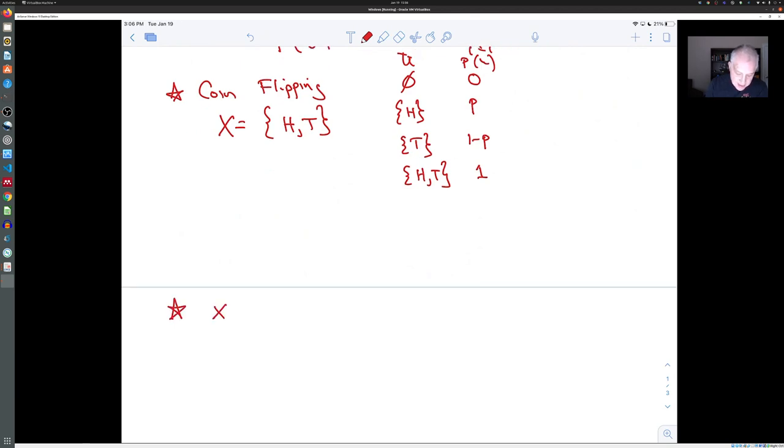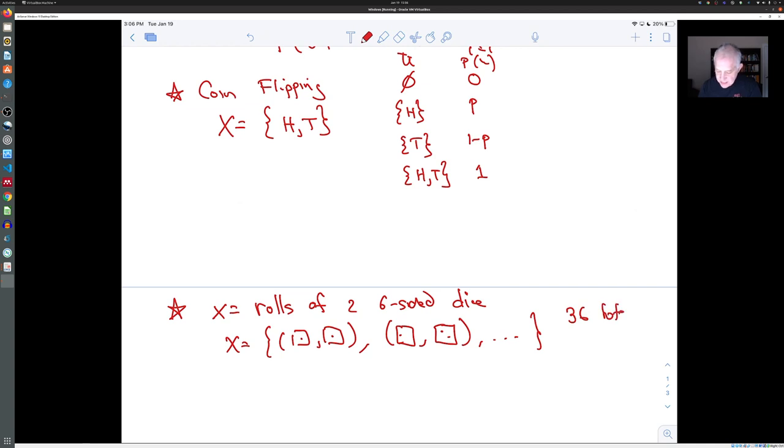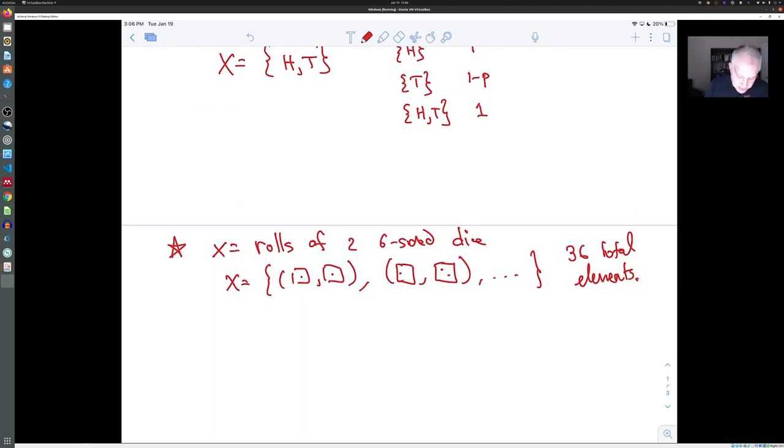Another example might be X is the set of rolls of two dice. So X consists of a pair, for example, of a dice with one and a dice with one, or a dice with one and a dice with two, and so on. It has 36 total elements, because there are six possibilities for the first and six for the second. And we can say that the probability of any particular roll is all the same. So the chance of getting two ones is the same as the chance of getting a three followed by a five.